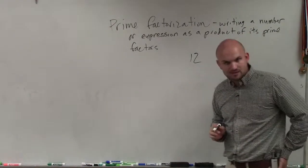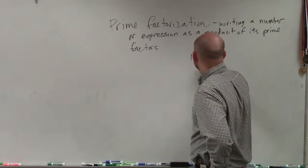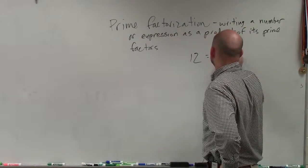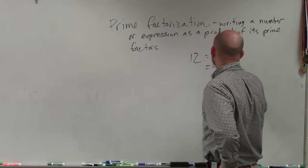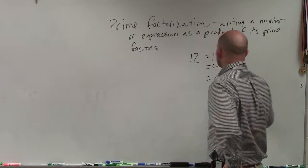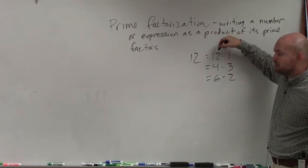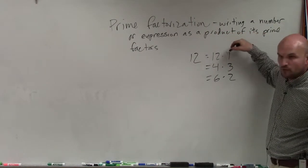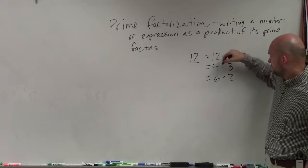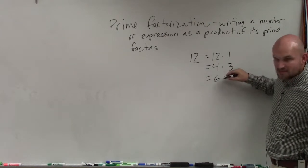Now obviously, we know 12 is a composite number. We can write 12 as a lot of different things. We could write it as 12 times 1, we could write it as 4 times 3, and we can write it as 6 times 2. But the only two factors that we see here that are prime are 2 and 3. 4 is not a prime number, and 6 is not a prime number.